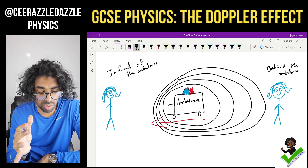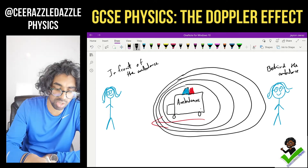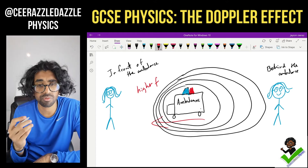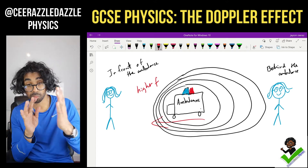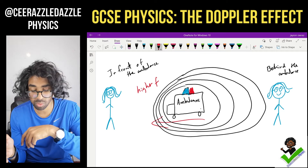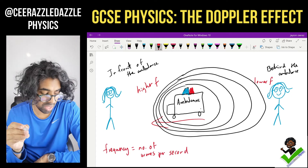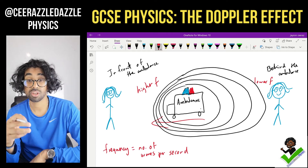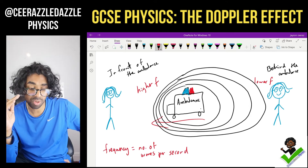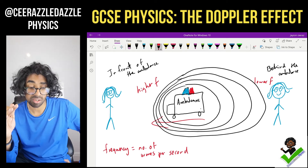In front of the ambulance the waves will be compressed, and therefore we will have a higher frequency — more waves arriving per second. If I'm hearing it from behind, I will hear a lower frequency because the waves are spaced out. So we get a lower frequency. Frequency is equal to the number of waves per second.